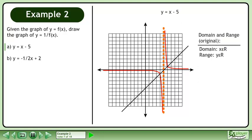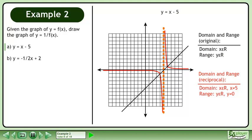The domain and range of the original graph is x belongs to the set of real numbers and y belongs to the set of real numbers. The domain of the reciprocal graph is x belongs to the set of real numbers with the restriction that x cannot equal 5. The range is y belongs to the set of real numbers and the y value will never equal 0. The asymptote equations are x equals 5 and y equals 0.